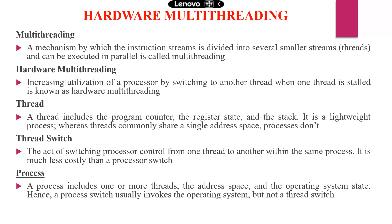A thread includes the program counter, register state, and the stack. It is a lightweight process, whereas threads commonly share a single address space. Thread switching is the act of switching processor control from one thread to another within the same process.